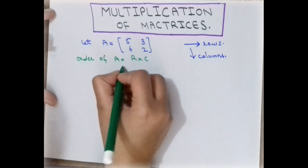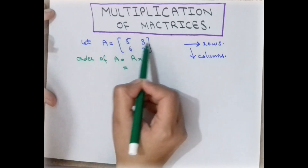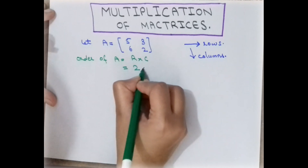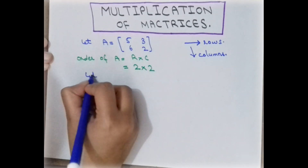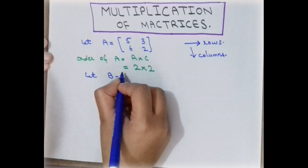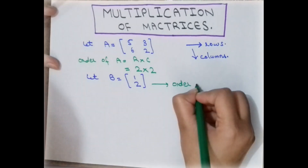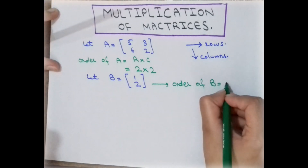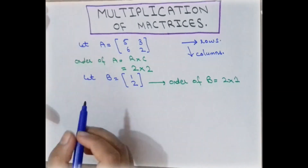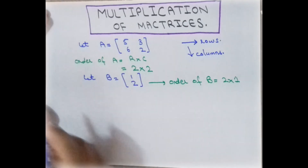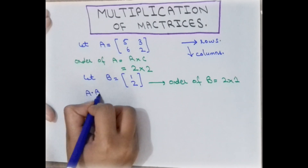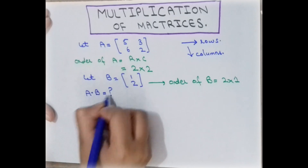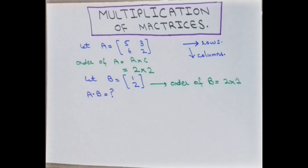In this matrix there are two rows and two columns. We also have another matrix B, which is a 2 by 1 matrix. We have to find the multiplication of these two matrices — basically we have to find this result. But first, there is a very important question: are these two matrices compatible for multiplication?